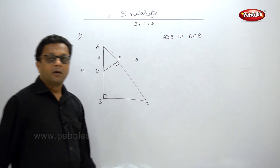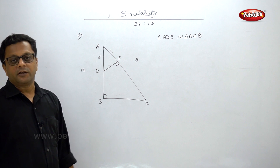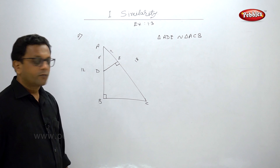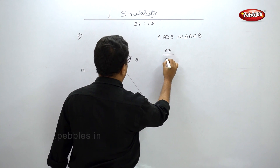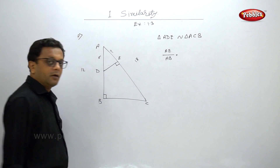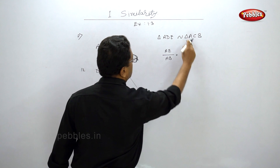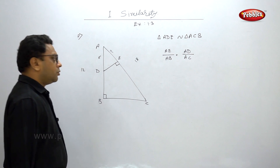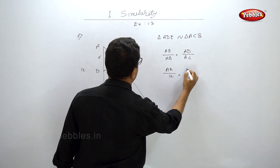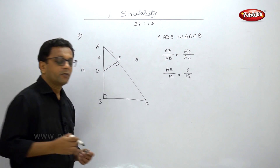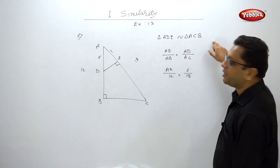Now it is easy to find AE. From the similarity, we write AE upon AC equals AD upon AB. We have AD = 6 and AB = 12 and AC = 18, so the calculation is straightforward. Don't forget to write the triangle symbol when stating the similarity.